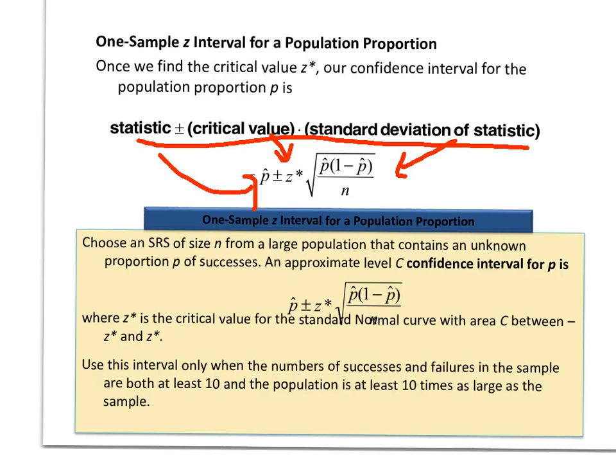This will be what we call a one-sample z interval. This is important because on the calculator, as I showed in class, we use the one-proportion z interval confidence interval whenever we want to do this kind of interval.